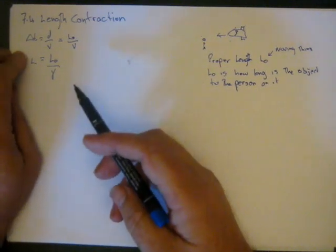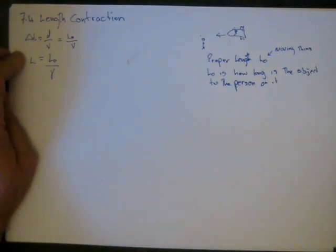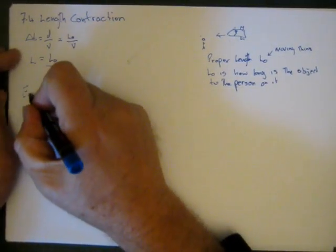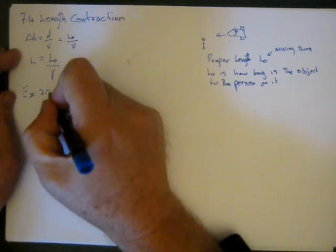And one of the usual tricks when you're doing relativistic stuff is just work out gamma separately and whenever you see it you can just stick those values in. So let's do exercise 7.2.